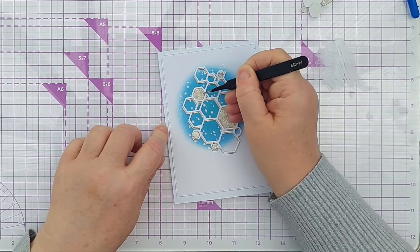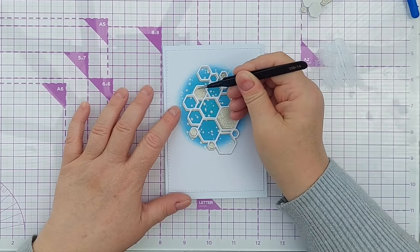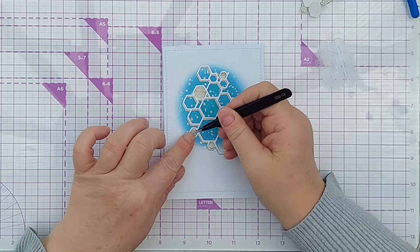If I'd have thought about it a little bit more, I might have stuck the gold frame down, put my gold hexagons in, and then stuck the white frame on top. But this works.